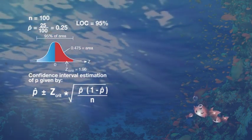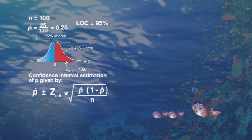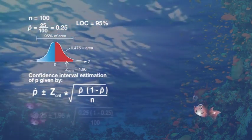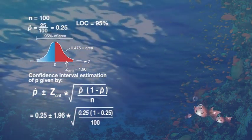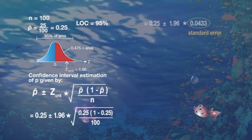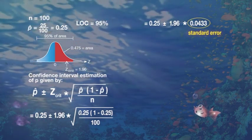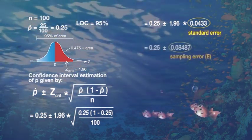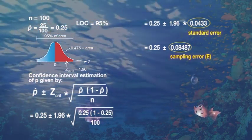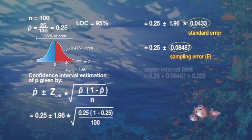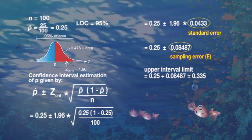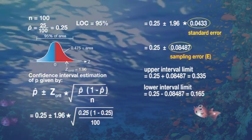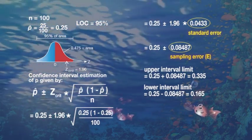Just be careful to note that n in this formula is the total sample size of 100 fish — it's not the 25 freaky fish, so use n = 100 there and not 25. If we put the numbers in for p-hat, z-critical, and n into this equation, we can calculate the numbers under the square root and get 0.0433 — this is called the standard error of the proportion, sigma p-hat. Multiplying that standard error by 1.96 gives 0.08487, which is the sampling error, called big E.